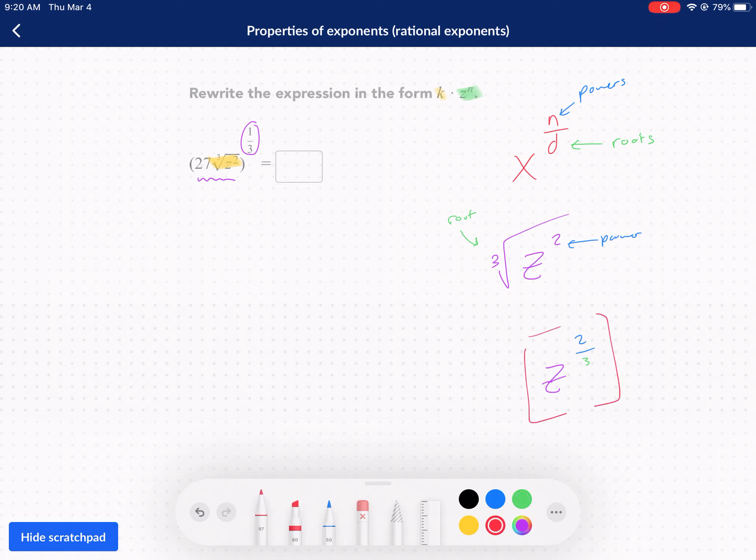So that's the first thing we're gonna do, is rewrite this inside the parentheses as z to the two over three power. Don't forget about the times 27, because remember, we're gonna have it in this form. This is still in parentheses, and we're gonna raise it to the one-third power. When you have an exponent on the outside, you have to essentially raise everything inside, everything that's separated by multiplication, to that same power.